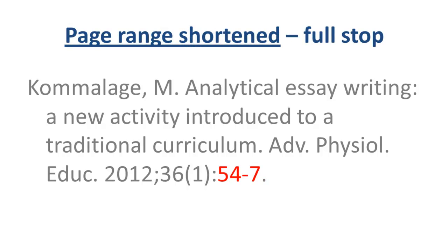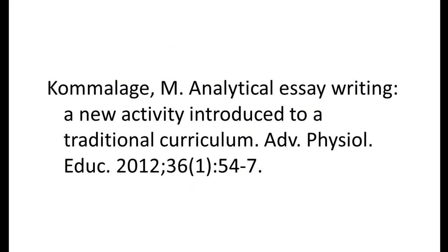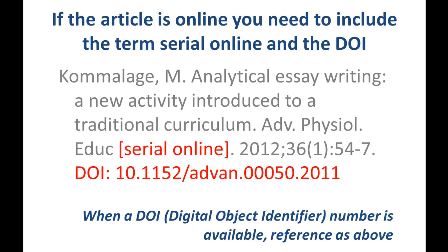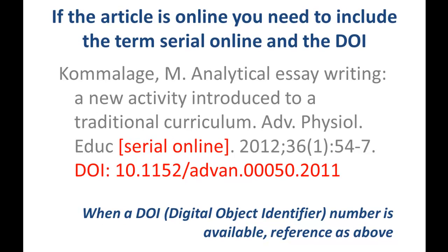Page number. Include the start and shortened end page of the article, separated by a dash, followed by a full stop. DOI. If available, you need to include the DOI for the journal article. If the article is online, you need to include the term 'serial online' in square brackets just after the journal title. At the end of the citation, add the DOI as a prefix, followed by the DOI number.